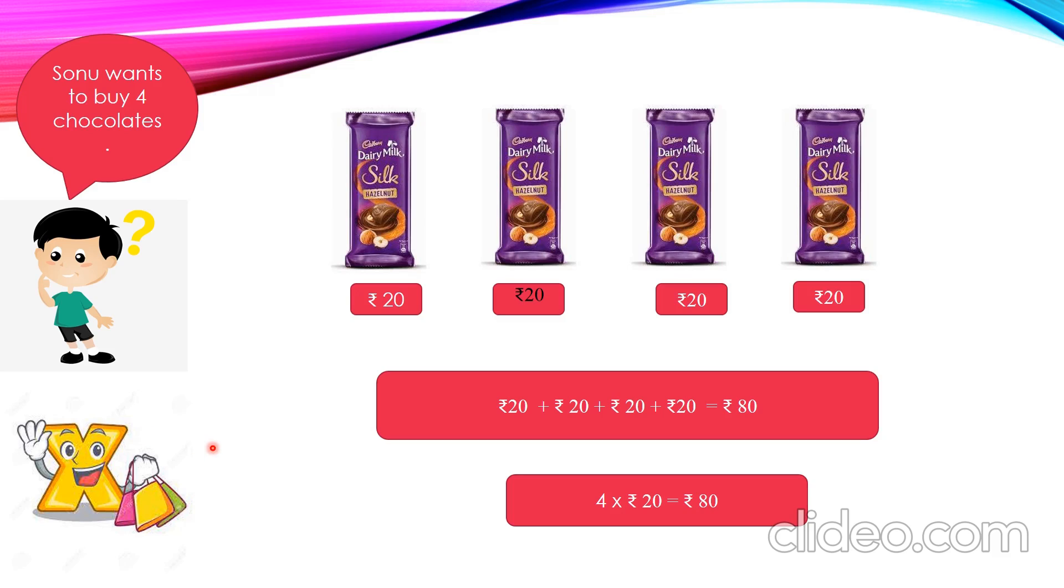You all know that repeated addition is nothing but multiplication. We can also find out, how many chocolates? 4. Each chocolate is 20 rupees. So 4 into 20 rupees, which gives 80 rupees. Here, if we know the cost of one item, to find out many items, we can apply the concept of multiplication. So how much money Sonu need to buy? 80 rupees.